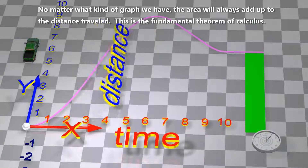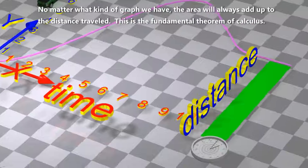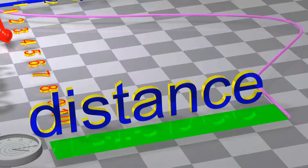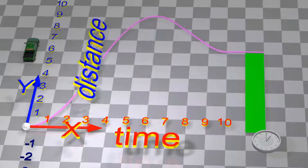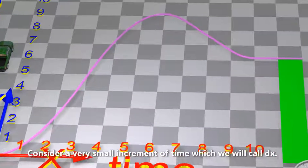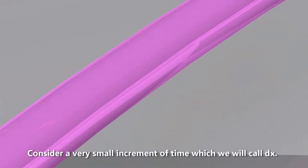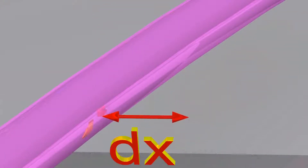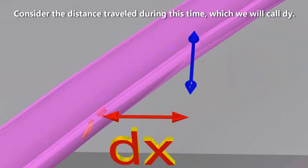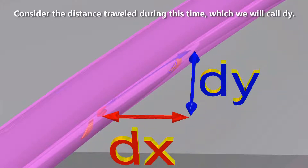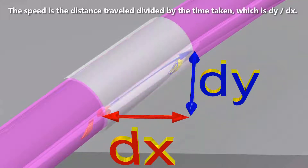This is the fundamental theorem of calculus. Consider a very small increment of time, which we will call dx. Consider the distance traveled during this time, which we will call dy. The speed is the distance traveled divided by the time taken, which is dy divided by dx.